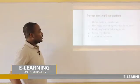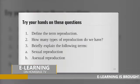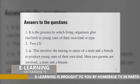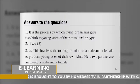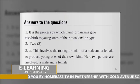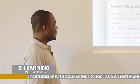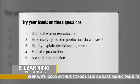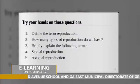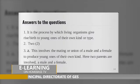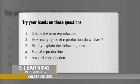Let's look at the questions. The first question was: define the term reproduction. The answer: it is a process by which living organisms give rise or birth to young ones of their own kind. I know you've got that right. The next question: how many types of reproduction do we have? The answer is two.